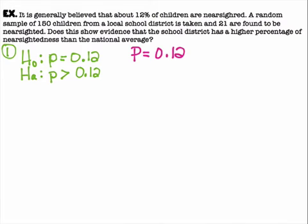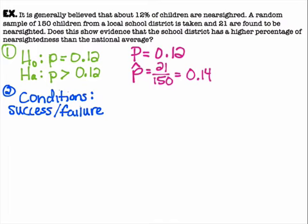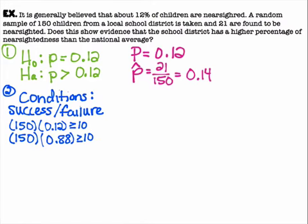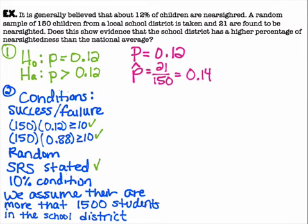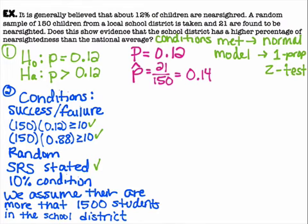The information needed: P = 0.12, P-hat = 21/150 = 0.14, and n = 150. Checking conditions: the success-failure condition — 150 × 0.12 ≥ 10 and 150 × 0.88 ≥ 10, both satisfied. The sample was stated as random. The 10% condition — we assume more than 1,500 students in the school district. Conditions are met; we'll use a normal model and perform a one proportion Z test.